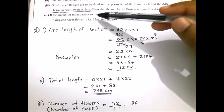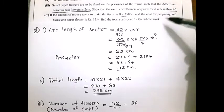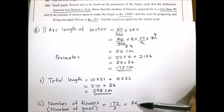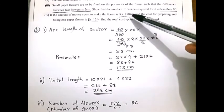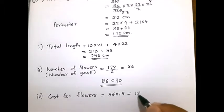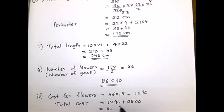Fourth part: the cost to make the frame is 2500 rupees and the cost for preparing and fixing one flower is 15 rupees. Find the total cost. There are 86 flowers. Cost for flowers: 86 multiplied by 15 equals 1290 rupees. Total cost: 1290 plus 2500 equals 3790 rupees. This is the answer for the fourth part.